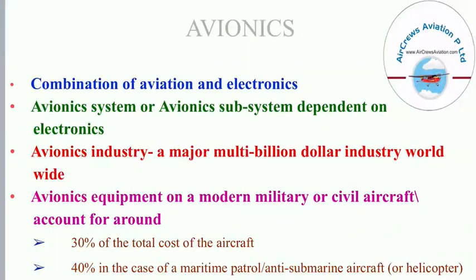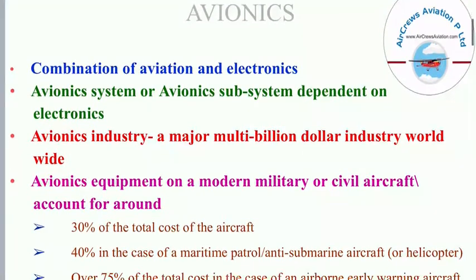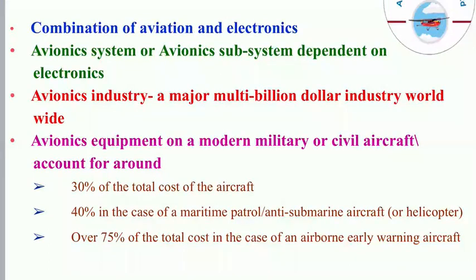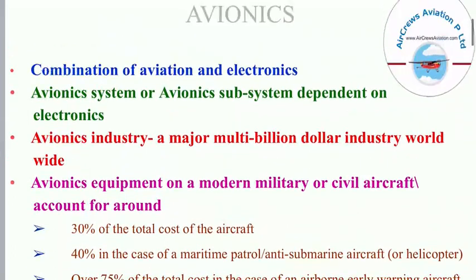So let's get started with today's topic, which is all about avionics. Avionics is the combination of aviation and electronics. Avionic systems and subsystems depend on electronics. The avionics industry is a major multi-billion dollar industry worldwide. Avionics equipment on a modern military or civil aircraft accounts for around 30% of the total cost of the aircraft, 40% in the case of maritime patrol or anti-submarine aircraft or helicopter, and over 75% in the case of an airborne early warning aircraft.